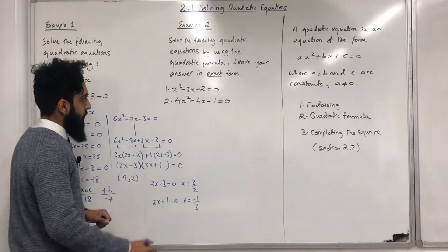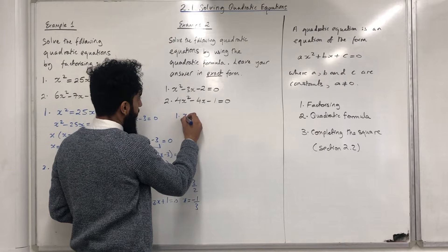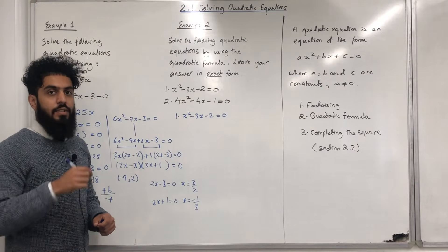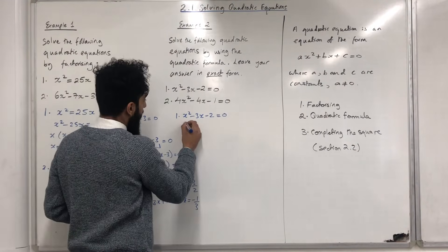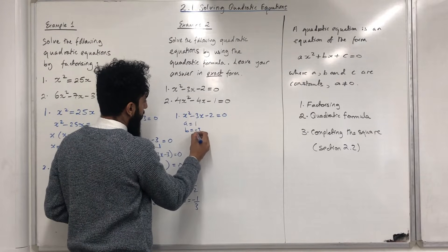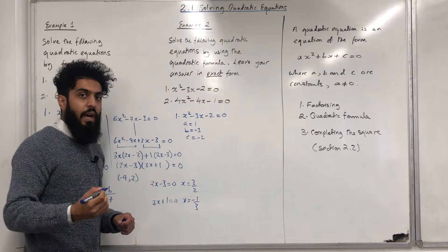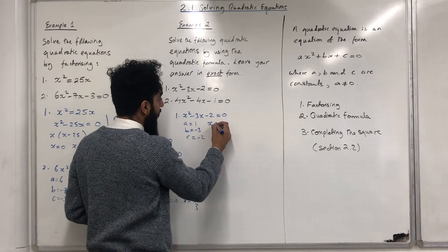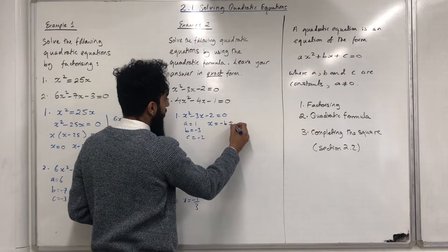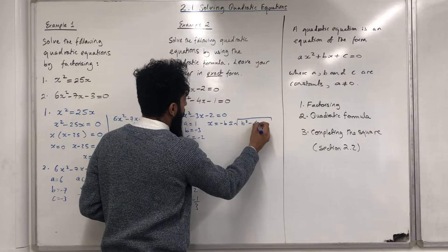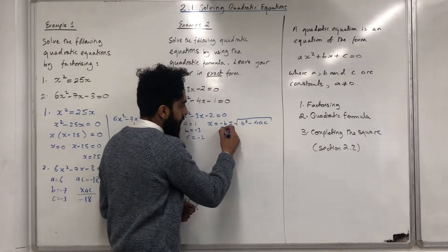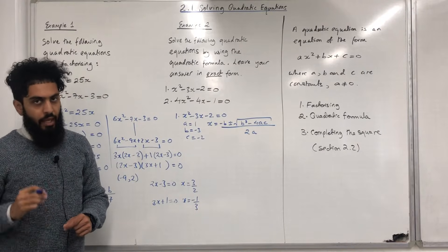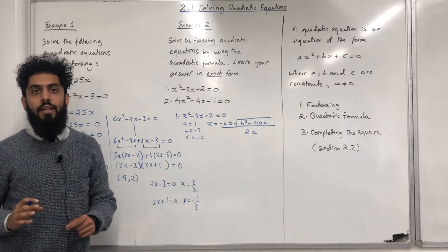Let's start off with the first question: X² - 3X - 2 = 0. The first step is to write down the constants A, B and C. A = 1, B = -3, C = -2. Now we write down the quadratic formula: X = (-B ± √(B² - 4AC)) / 2A. Note that B² - 4AC has a special name — it is called the discriminant, which I will cover in section 2.5.